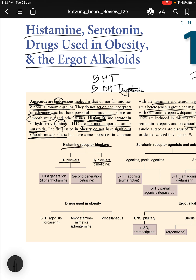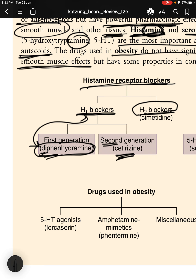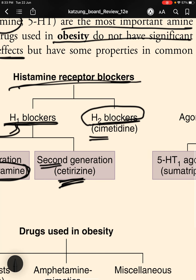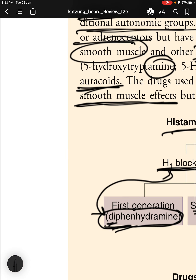For histamine receptor blockers, we have H1 and H2 receptor blockers. H1 blockers come in first and second generations: first generation is diphenhydramine — note 'di' meaning two, a memory aid for first gen — and second generation is cetirizine. H2 blockers include cimetidine, which we learned about in class 12 chemistry alongside ranitidine.